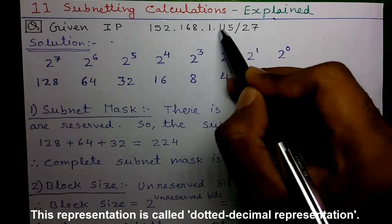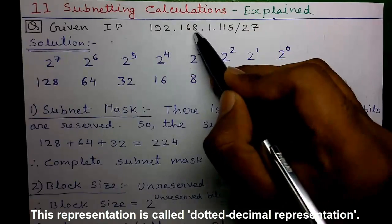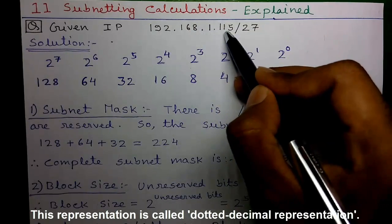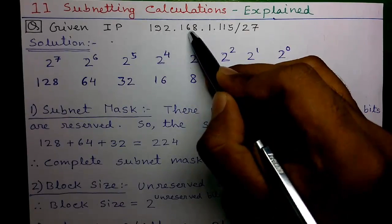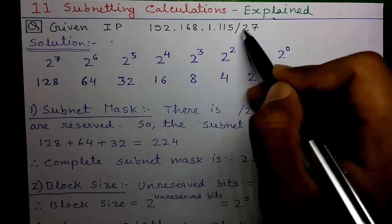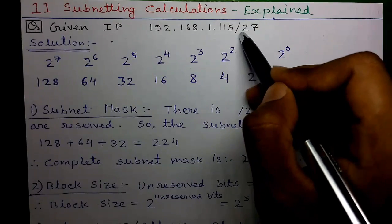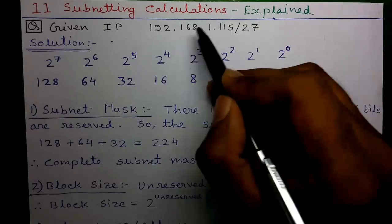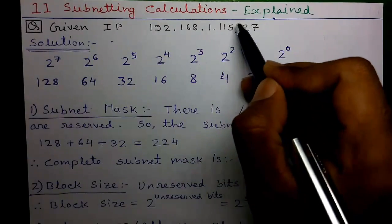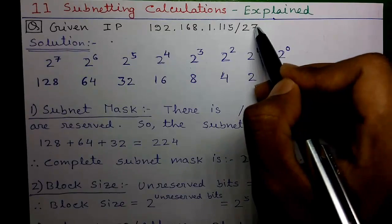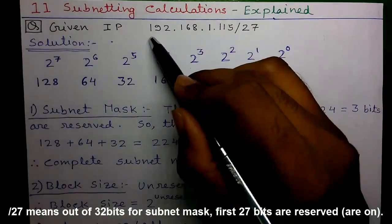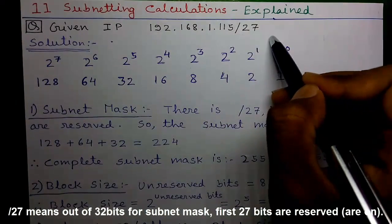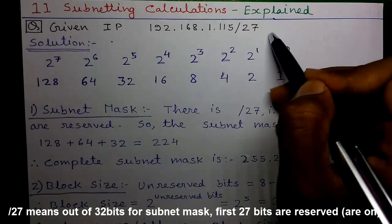This representation is called dotted decimal notation because the numbers are represented using the decimal number system and separated by dots, but basically each number is an 8-bit binary number. The subnet mask is also a 32-bit binary number. Slash 27 means out of 32 bits, the first 27 bits are kept as one and the remaining five bits are kept as zero. In other words, from the left, first 27 bits are reserved and unreserved bits are five.